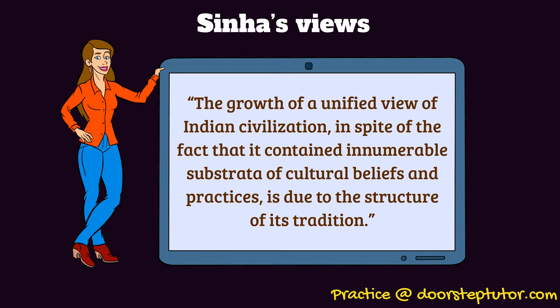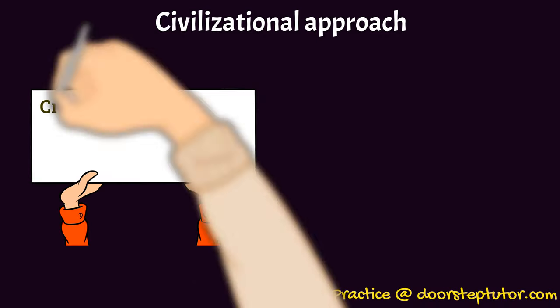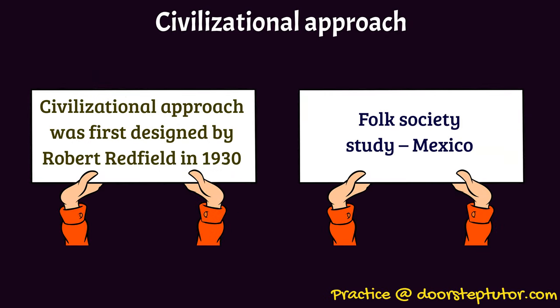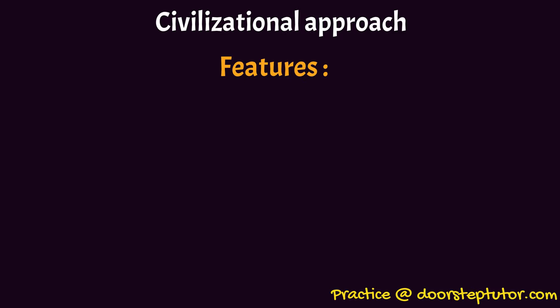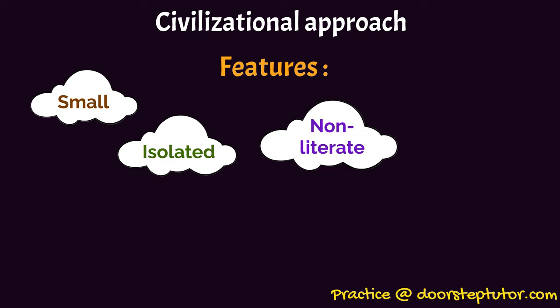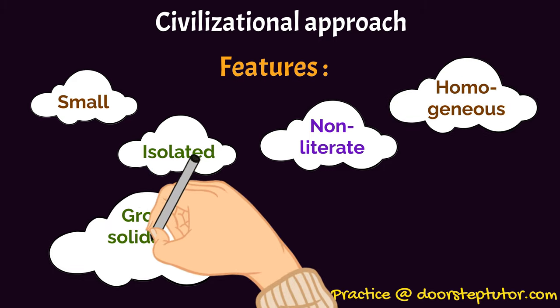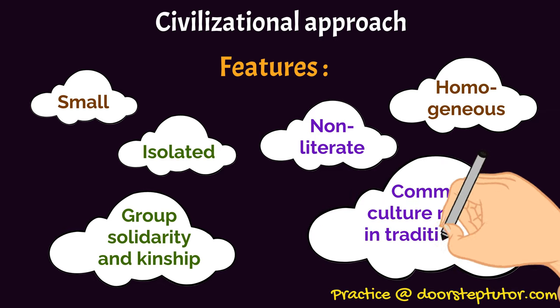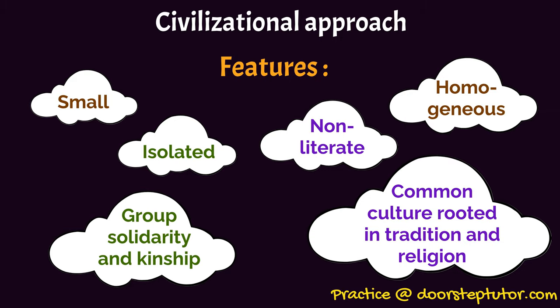He says there is a link between the little and the great traditions — which we have already discussed — and this has created a historical reality where there has been a transformation and a synthesis of the little tradition and the great tradition of India. He studied this using the civilizational approach, first designed by Robert Redfield in his study of folk society in Mexico. Features of folk societies: they are small, isolated, non-literate, homogeneous, with group solidarity, kinship, and a common culture rooted in tradition and religion.